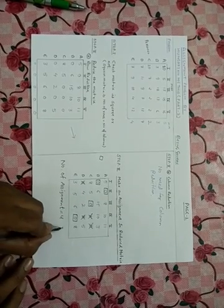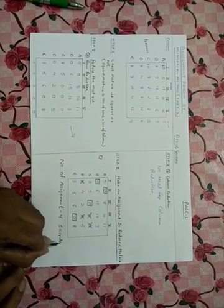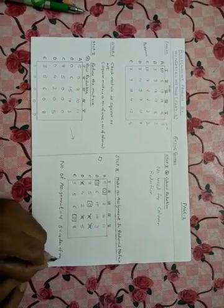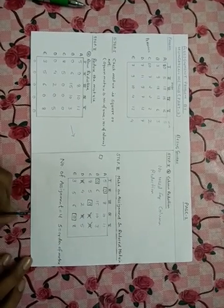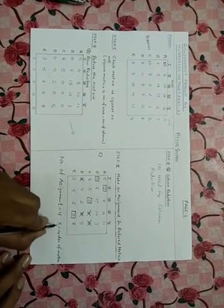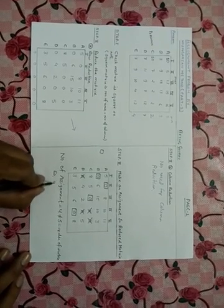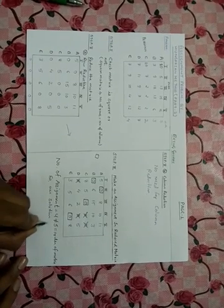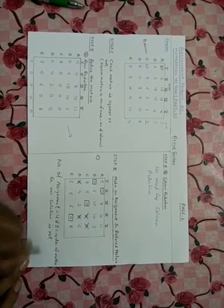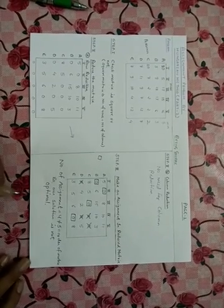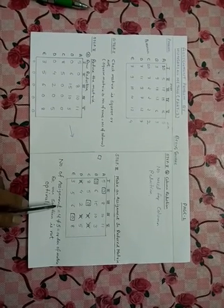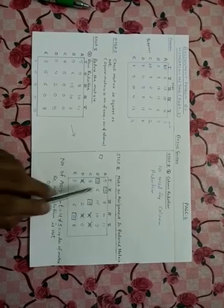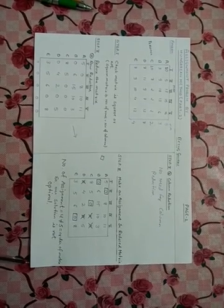The number of assignments is 4, but the order of the matrix is 5. Since the number of assignments does not equal the order of the matrix, the solution is not optimal, so we must improve it.